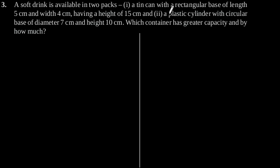First, a tin can with a rectangular base of length 5 cm and width 4 cm, having a height of 15 cm. And second, a plastic cylinder with circular base of diameter 7 cm and height 10 cm. Here, which container has greater capacity and by how much.